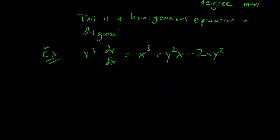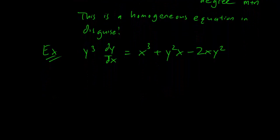And what's going to happen is that we can divide both sides by y³ to get dy/dx equals x³/y³ plus x/y minus 2x/y.